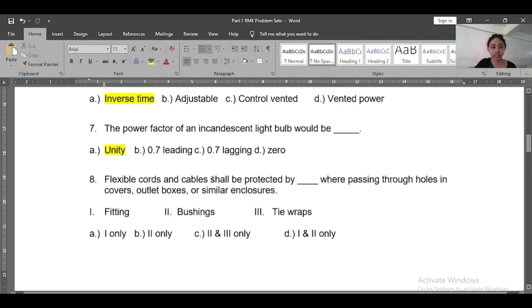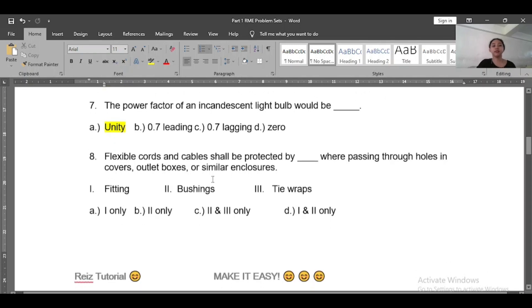Number eight: Flexible cords and cables shall be protected by blank where passing through holes in covers, outlet boxes, or similar enclosures. So the answer is - I know the choices are one only, C is two and three, B is one and two - so the answer is one and two only, the fitting and bushing.